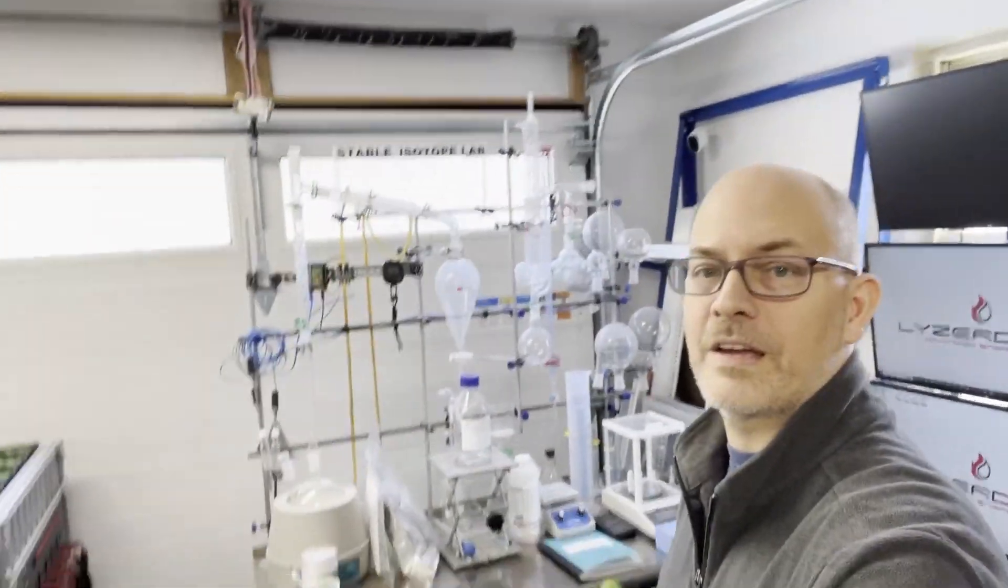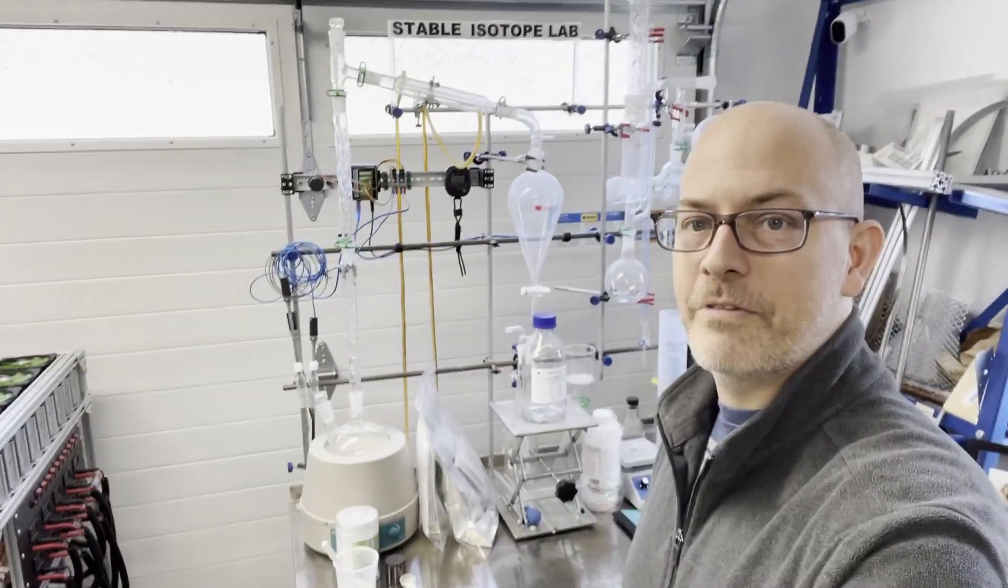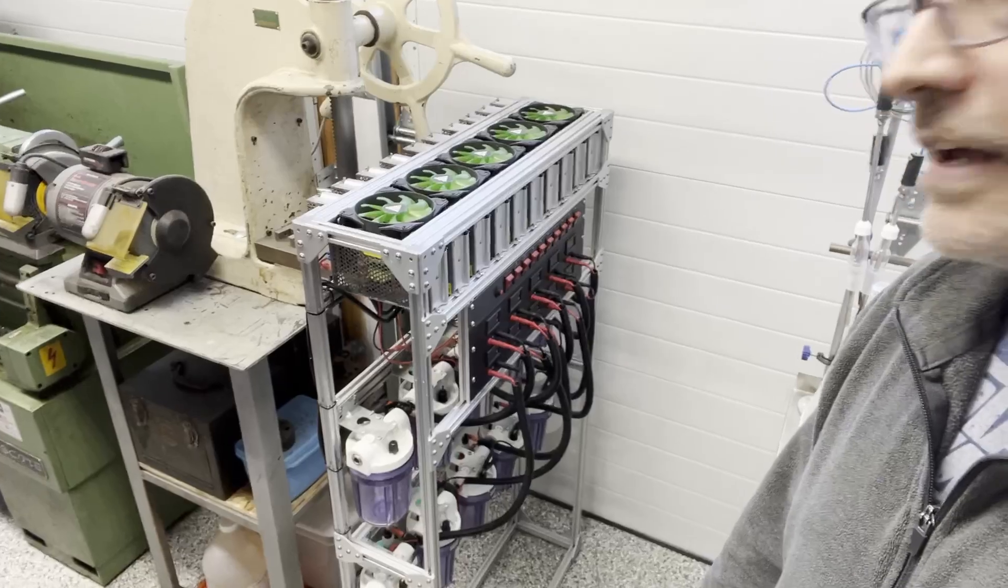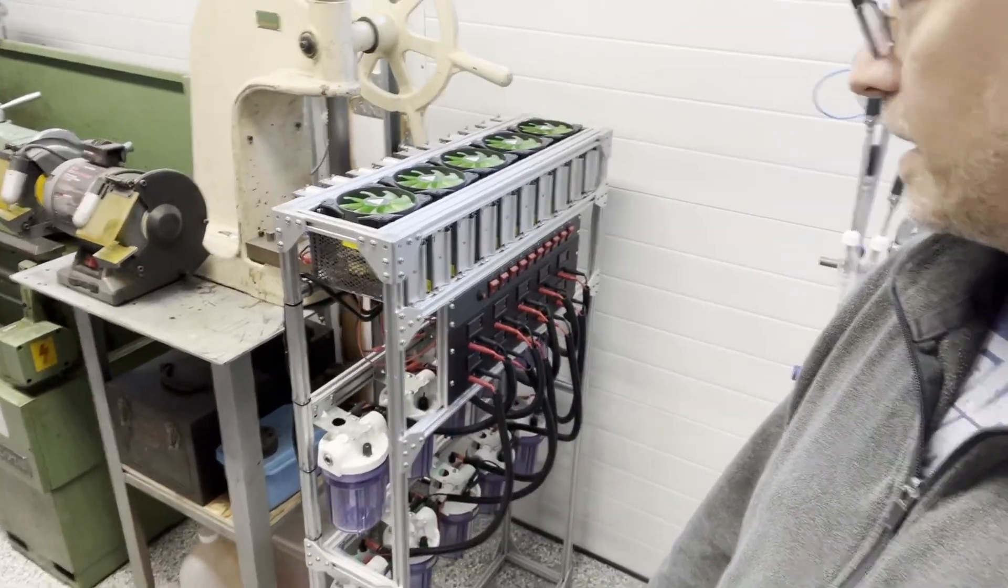Over here is my breaking bad setup. This is where I do the heavy water distillation. Over here is the cascading electrolysis for heavy water. That's a unit that I made all myself.